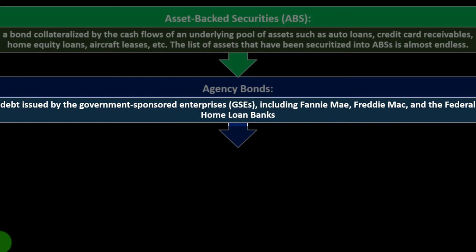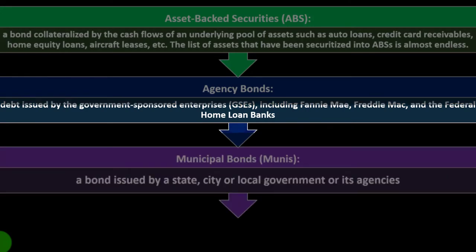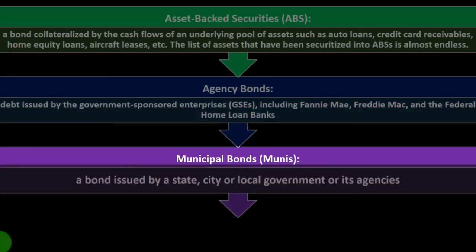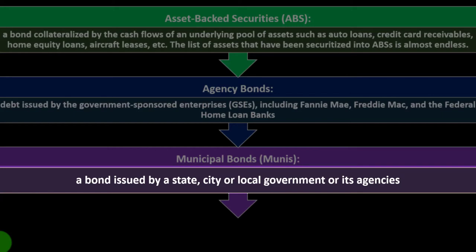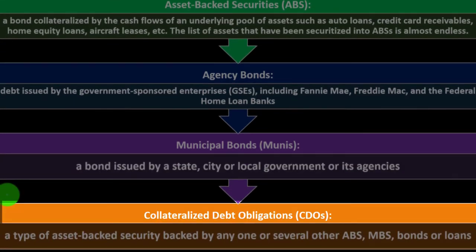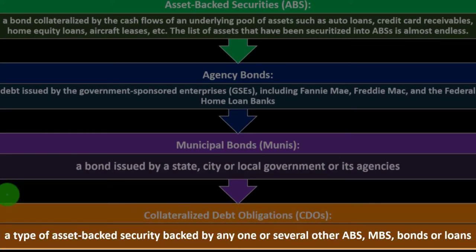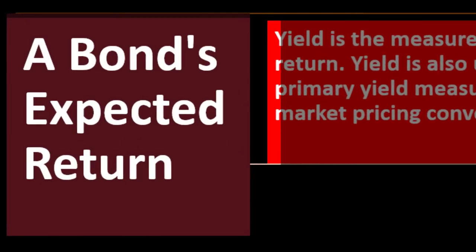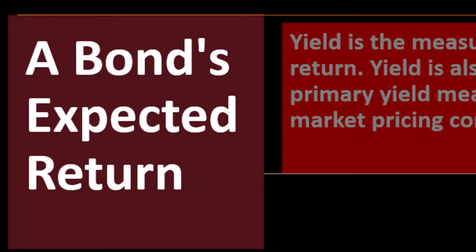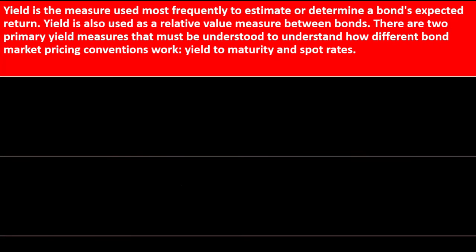Agency bonds are debt issued by government-sponsored entities (GSEs), including Fannie Mae, Freddie Mac, and Federal Home Loan Banks. Municipal bonds, or munis, are bonds issued by a state, city, or local government or its agencies. Collateralized debt obligations (CDOs) are a type of asset-backed security backed by any one or several other ABS, MBS, bonds, or loans.